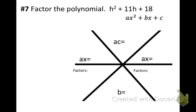1h squared plus 11h plus 18. Our a value is 1. Our c value is 18. So 1 times 18 is 18. Our b value is 11. So we're looking for factors of 18 that if we combine them, we get 11.